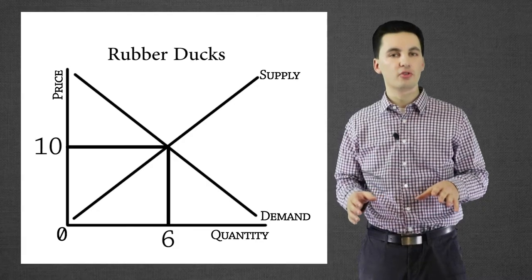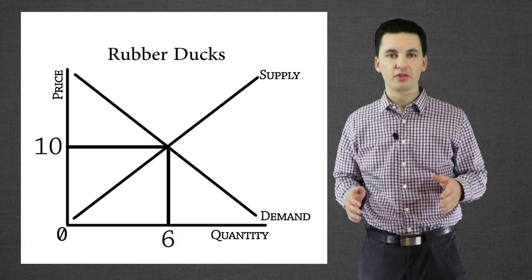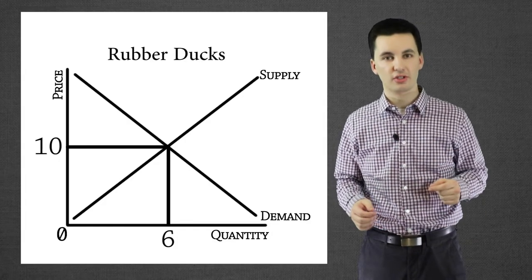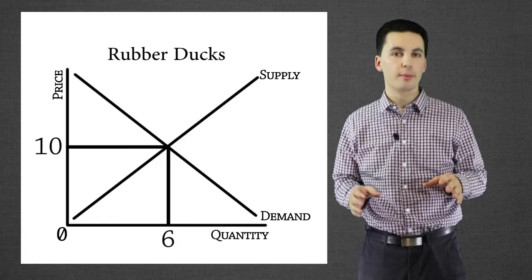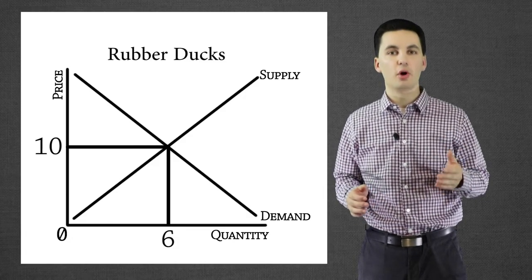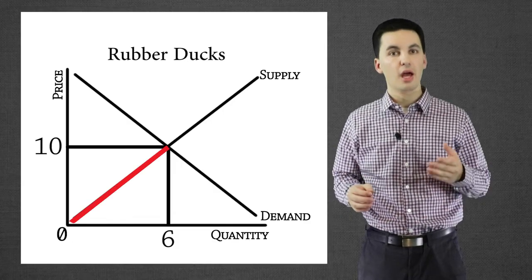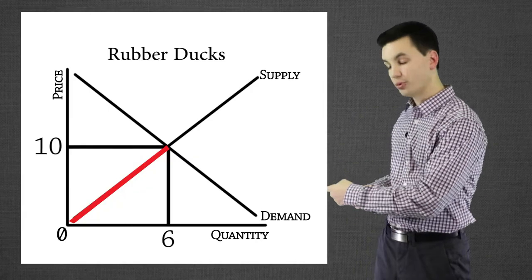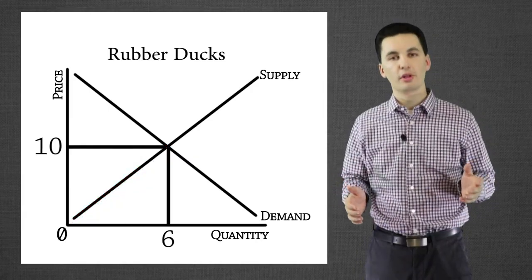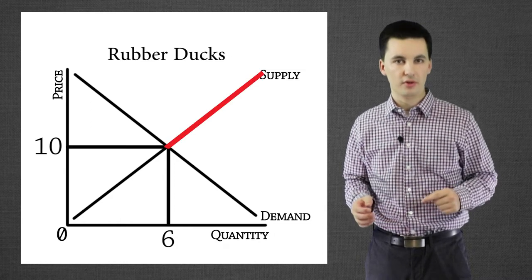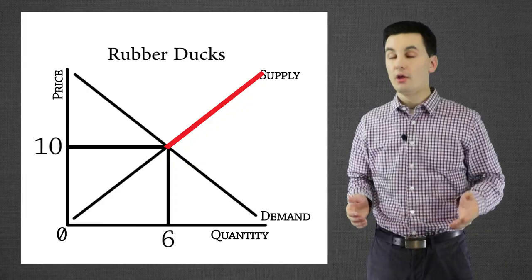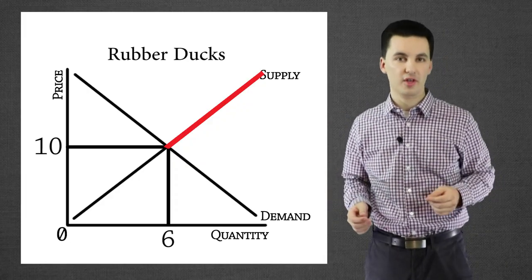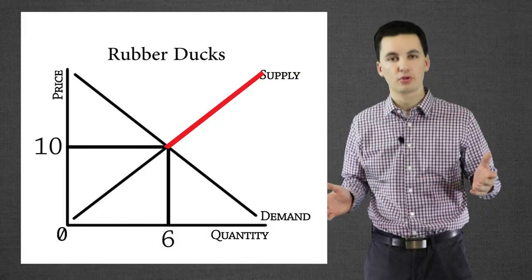We can also see our producer surplus. The producer surplus is the difference between what producers were willing to sell the product for and what they actually get to sell it for. Looking at the supply line, I will take anything that is below the equilibrium — that's going to be where our producer surplus is. These are companies that are willing to make the product and sell it for cheaper. Producers willing to make more supply if the price was raised above the equilibrium would not be factored in; they would not be part of the producer surplus because no transaction will happen.